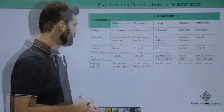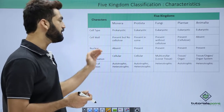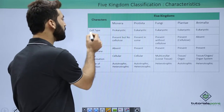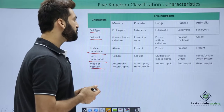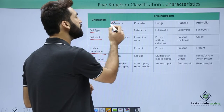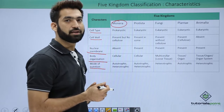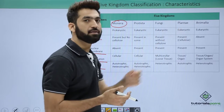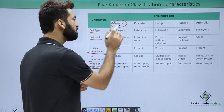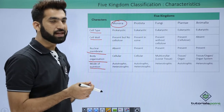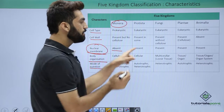When comparing the five kingdoms, only Monera members are prokaryotic; all other kingdoms — Protista, Fungi, Plantae, and Animalia — are eukaryotic. Prokaryotic means a primitive nucleus, which means there is no nuclear membrane. So the nuclear membrane is absent in kingdom Monera, while all the remaining kingdoms have a nuclear membrane.